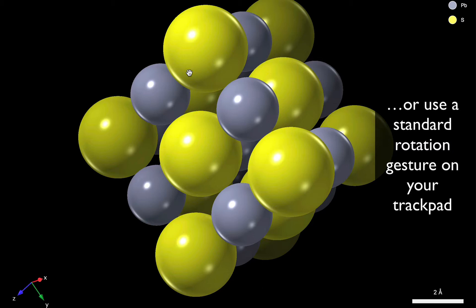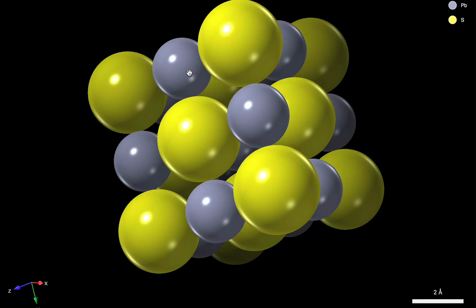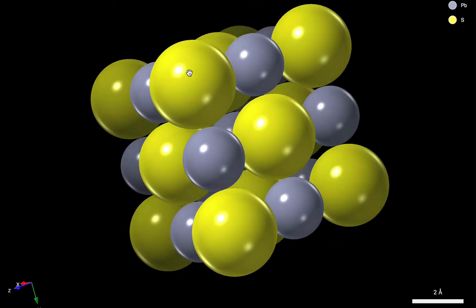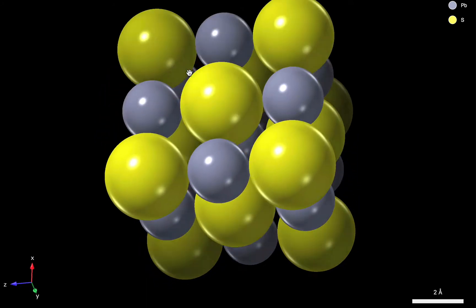Now this, again, is easier to do with a trackpad because we can use a standard rotation gesture on the trackpad, or we can slide two fingers across or up and down the trackpad to rotate about the other axis.